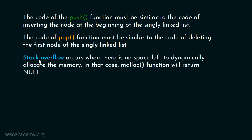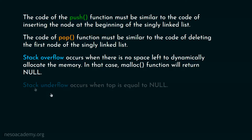For checking the stack overflow condition, we can check this through the malloc function. Stack overflow occurs when there is no space left to dynamically allocate memory — although stack overflow is very rare in this case. When malloc returns null, it means stack overflow has occurred. Similarly, stack underflow occurs when the top is equal to null. When top becomes null, it means the stack is empty — top must not point to any node.